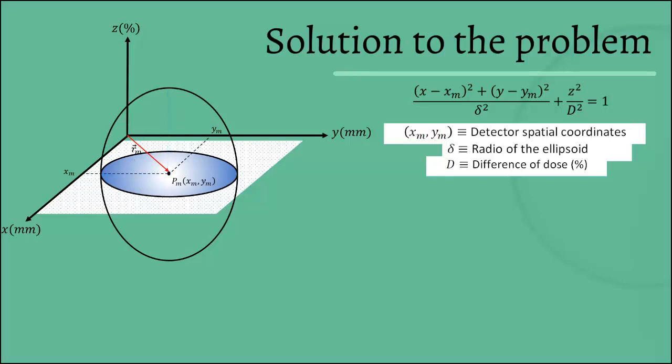Let's think of a point, PC, which is a point of the plane dose calculated by the system of planning. This point evidently on the plane X and Y has coordinates XC, YC, and a position vector RC.